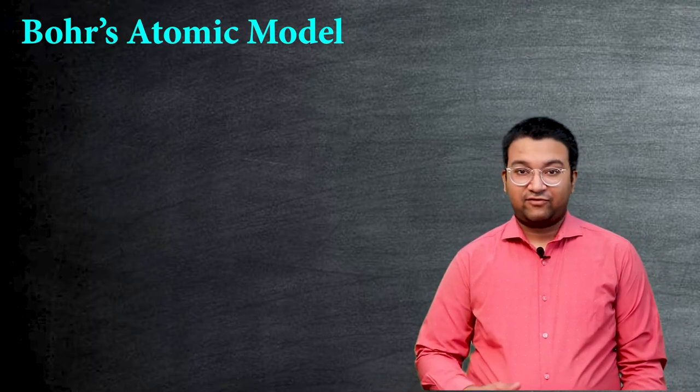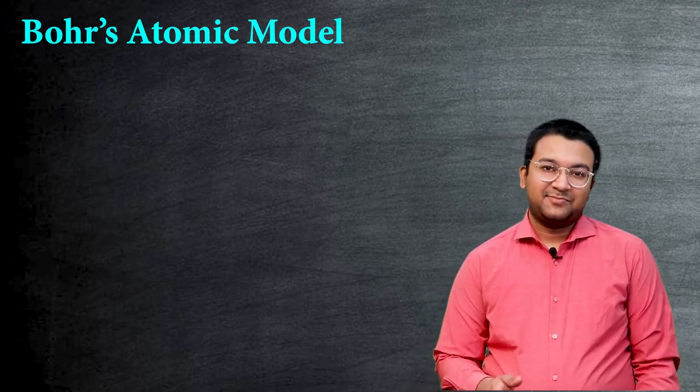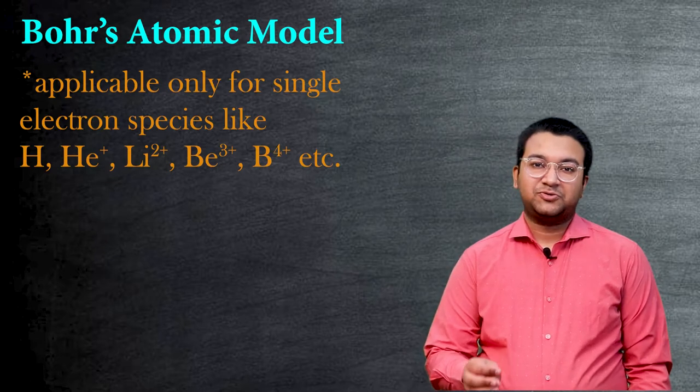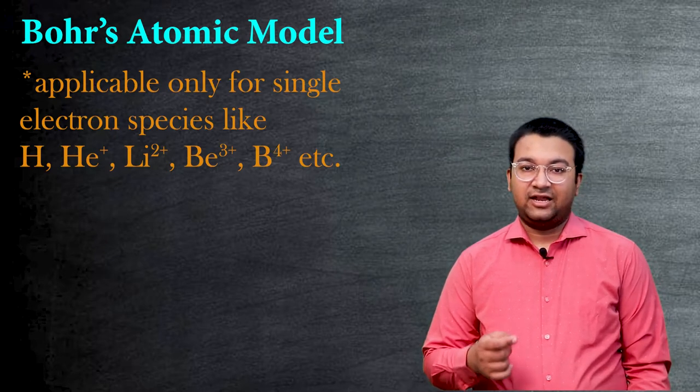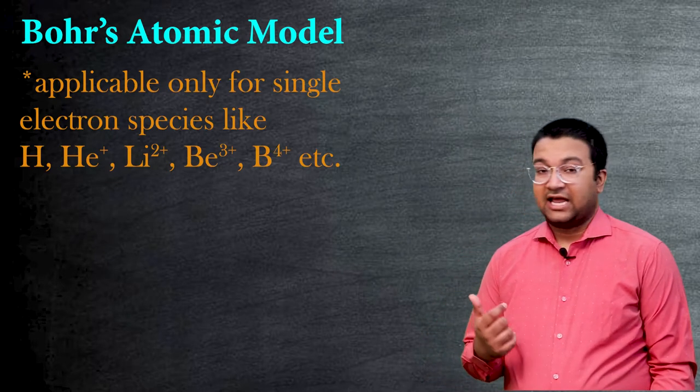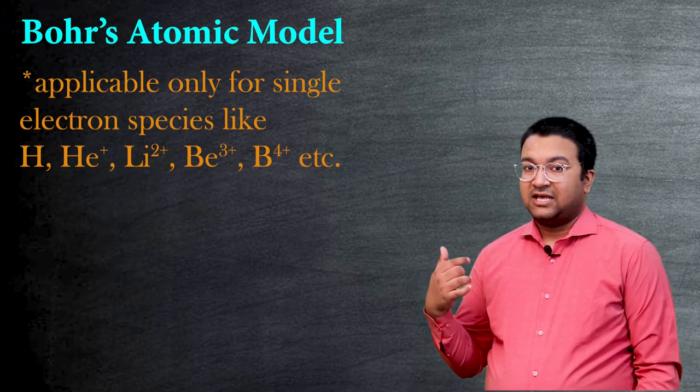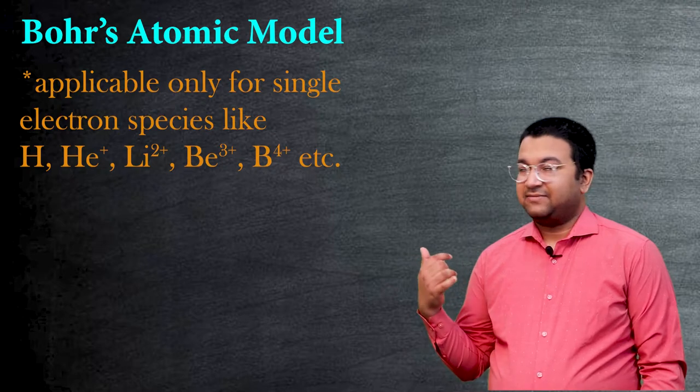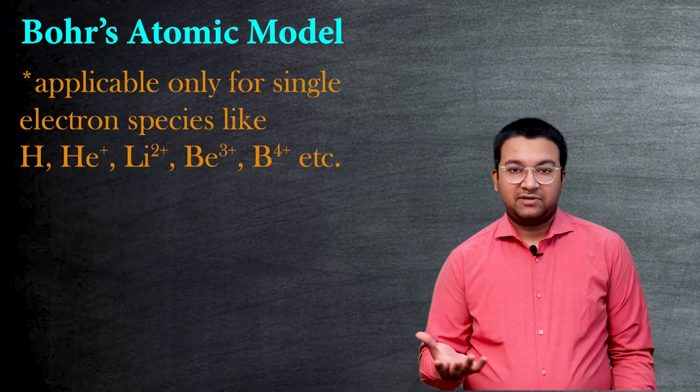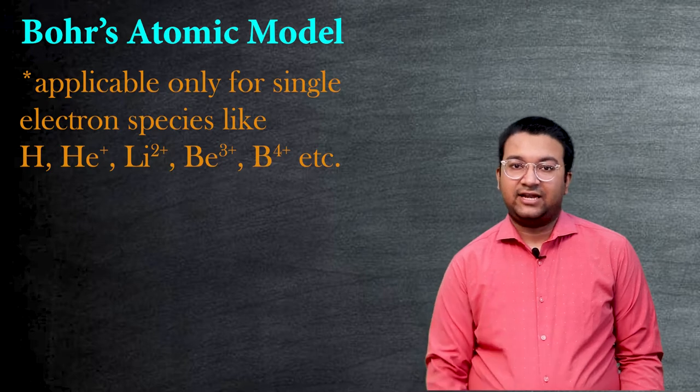Before we start this model, we have to keep one thing in mind that this model is applicable only to those species which contain only a single electron. For example, we can have hydrogen atom, He+, Li2+, Be3+, and so on. Only these species, why? Because they contain exactly one electron.